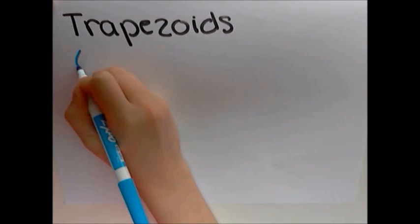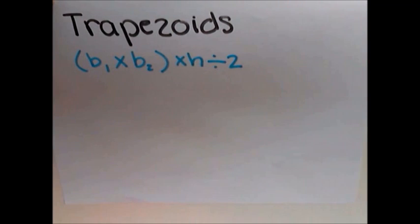The rule for trapezoids is a little more complicated. It's base 1 plus base 2 multiplied by the height and divided by 2. When multiplying the bases and multiplying them by the height, you're doubling the size of the trapezoid. But we only need the area of one trapezoid. So we divide by 2.